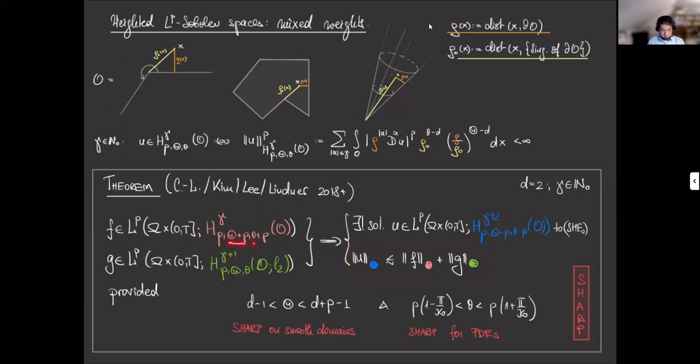Note that the different parts of the equation have different weights. Now this result holds for all capital theta in this range and all little theta in this range, where this kappa naught here is the maximal interior angle of your polygon, or in the case of this dihedral angle or this angular domain, it is simply this angle here.